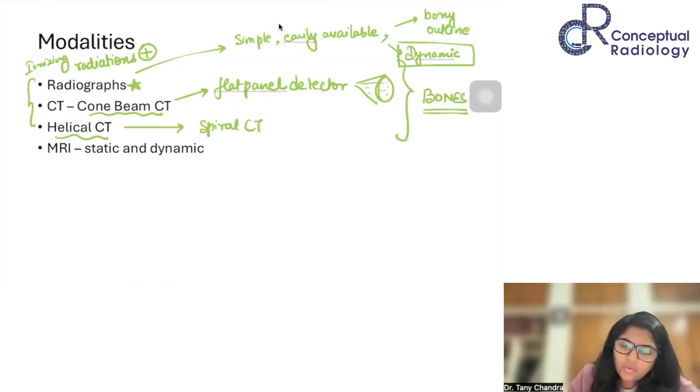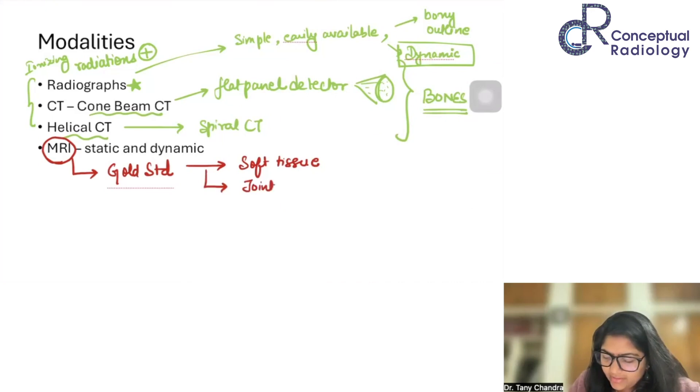What is the gold standard to look at a temporomandibular joint? Well, the gold standard would here be an MR. Why will it be a gold standard to look at it? It is a gold standard because first of all, it will tell us about the soft tissue, especially joint related soft tissues. We will see further. Anyways, we can appreciate the effusions, synoviums, better.